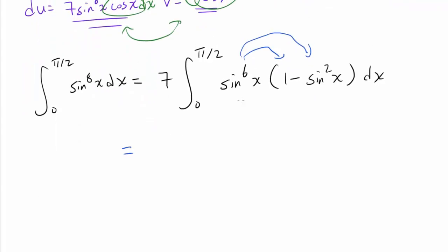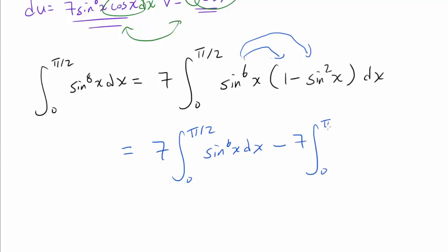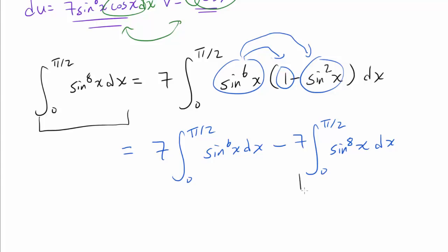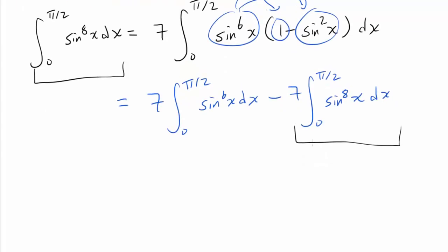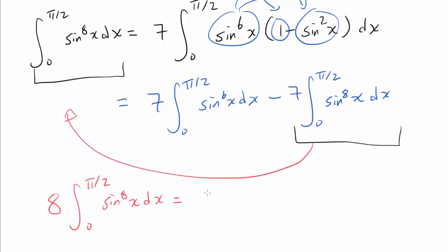Distributing and splitting the integral gives 7·∫₀^{π/2} sin(x)^6 dx minus 7·∫₀^{π/2} sin(x)^8 dx. We notice the integral of sin(x)^8 appears on both sides, so we move it to the left: 8·∫₀^{π/2} sin(x)^8 dx = 7·∫₀^{π/2} sin(x)^6 dx. Dividing both sides by 8 gives ∫₀^{π/2} sin(x)^8 dx = (7/8)·∫₀^{π/2} sin(x)^6 dx.